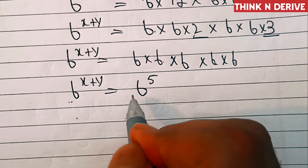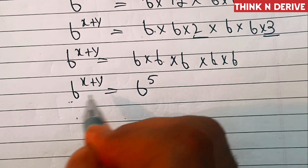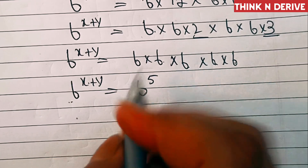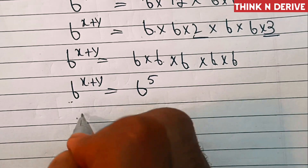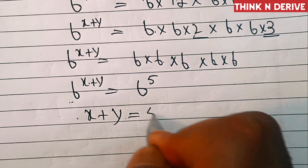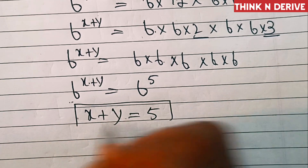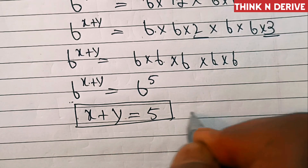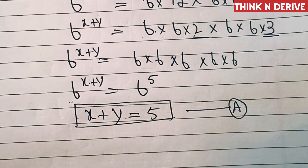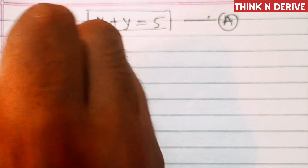Now we have the same base on both sides of the equation, so the exponents must be equal. That is, x plus y equals 5. Let's call this equation A.